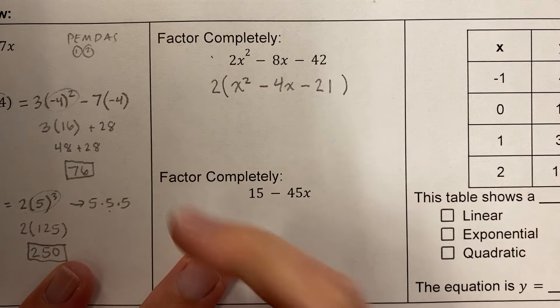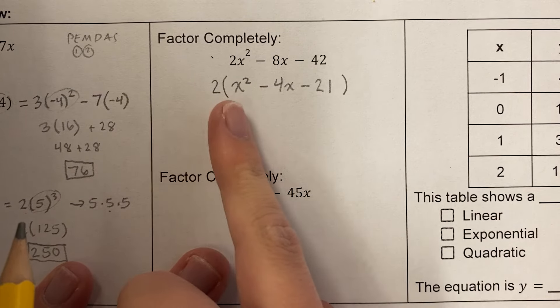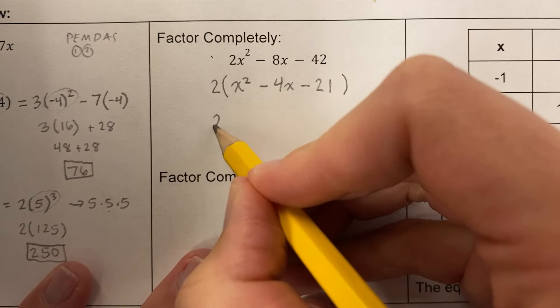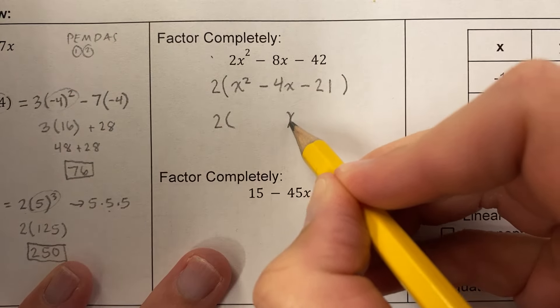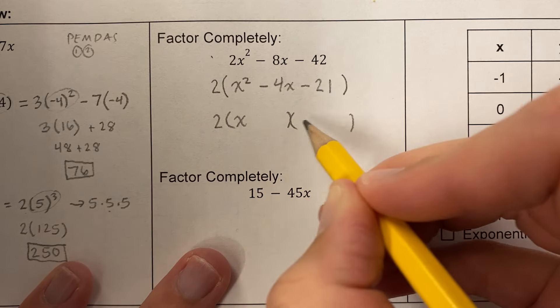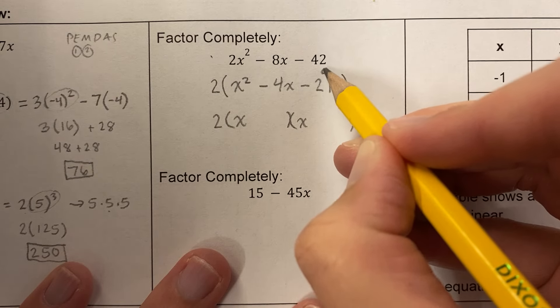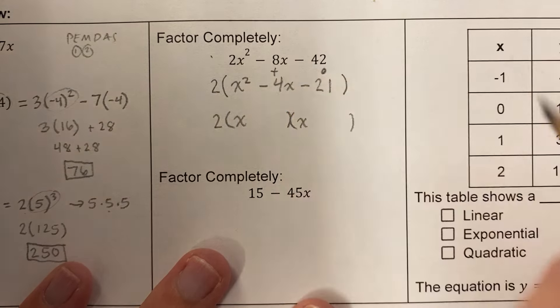And then it says factor completely. So we're not just taking out the greatest common factor. We also have to ask ourselves, can this be factored? And the answer is, yeah, it can. This is our deal where there's x squared out in front. So that x squared is going to come from x times x. And then what I'm looking for is two numbers that multiply to negative 21 and add to negative 4.